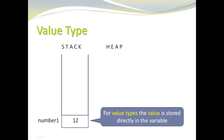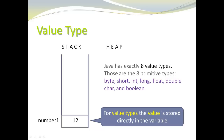Let's start with value types. Here I have an integer variable, number 1. Integer is a value type, and you can see that the number 12, the value of my integer, is stored directly in the variable. Java has exactly 8 value types, and these are the 8 primitive types.